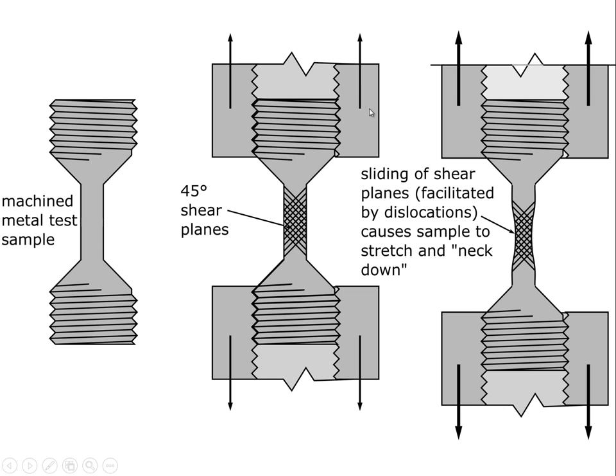We don't want it to fail there because it will not only not give us valid data, but it will tear up our testing machine. So we will take this and put it on a lathe and machine it down so that we know the failure will occur in this zone. Once we start to apply a stress, there's a whole series of planes, both this way and that way, that are in a state of shear. Those planes will start sliding by each other and we end up with this kind of behavior where the material actually necks down.